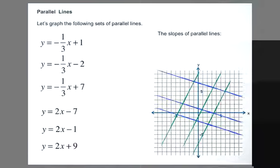The slopes of parallel lines - let's compare the slopes. For the first line, it was -1/3, as it was for the second line and for the third line.